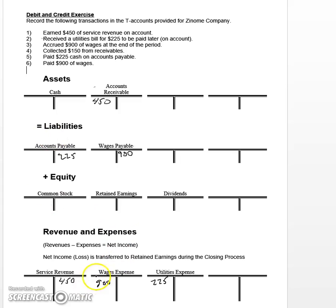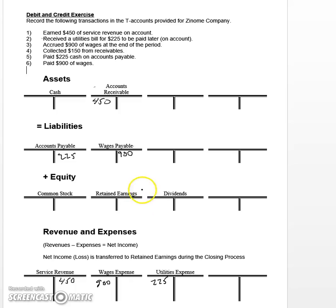Don't worry that your basic accounting equation doesn't balance, because this is going to take care of itself when we close the books at the end of the period. Remember, revenues minus expenses equals net income, and that net income will get transferred to retained earnings. There's no need to impact retained earnings right at this point because we're putting things down to the account level, and the closing process at the end of the period will take care of that for us, so we know that this is in balance.